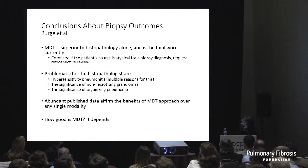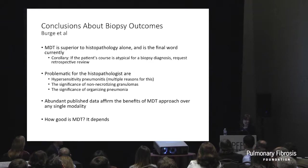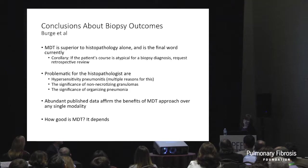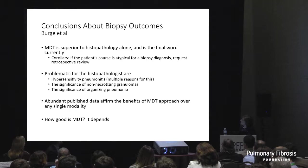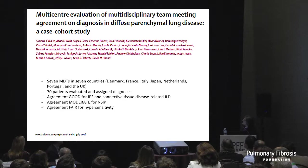Problematic areas for the pathologist include hypersensitivity, non-necrotizing granulomas — which can appear in sarcoid and hypersensitivity, and occasionally in otherwise typical UIP — and organizing pneumonia, which is usually a more acute injury but can look like a fibroblastic focus if cut at the wrong angle. Trainees sometimes struggle to sort out that difference. Abundant published data affirms the benefits of the multidisciplinary approach, though there remains no gold standard.